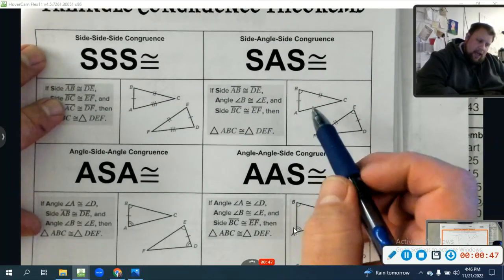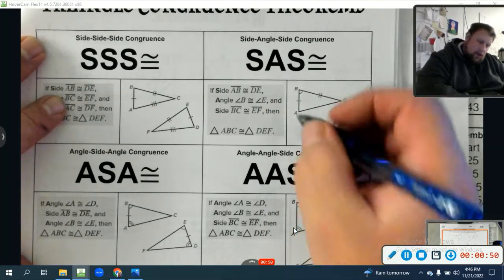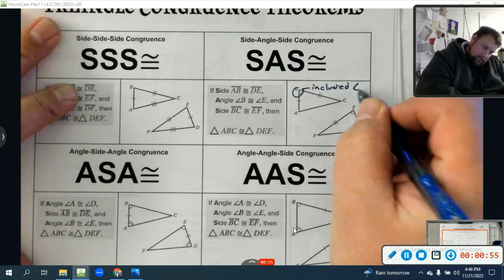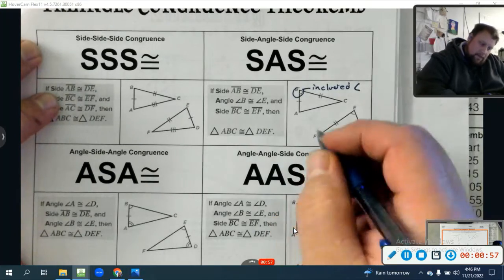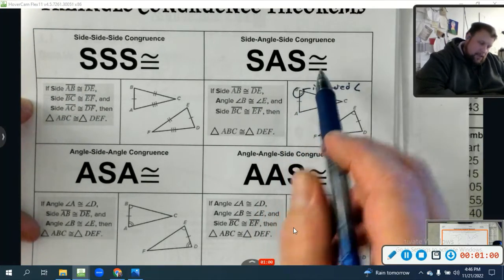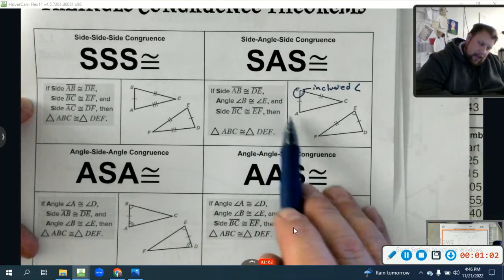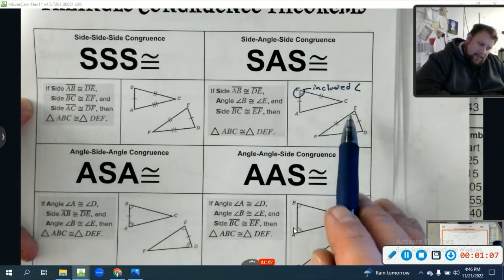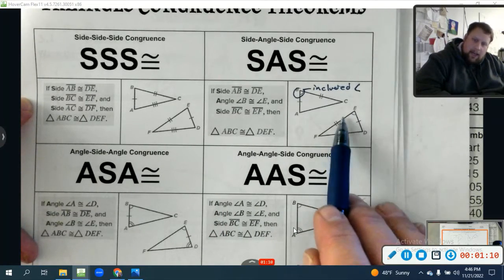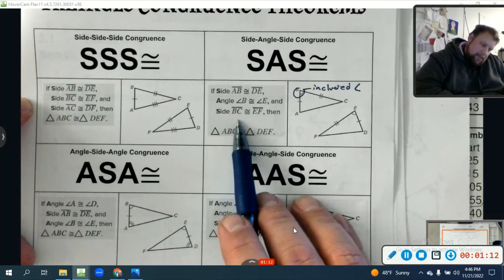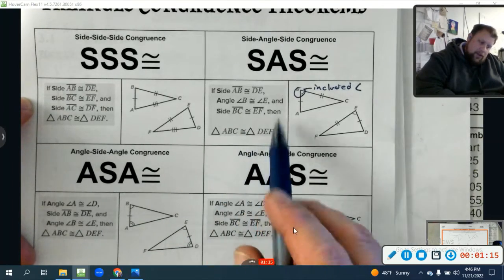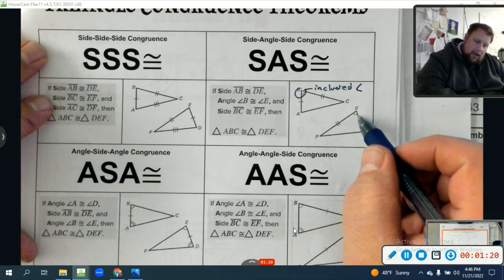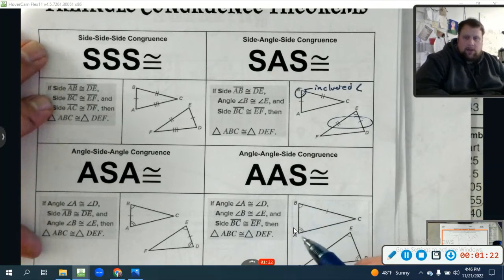Same deal with side, angle, side. Now, here's the deal. So this is called an included angle. Side angle side congruency is this: if side AB is congruent to DE, angle B is congruent to angle E - that's the angle inside. Included means inside the two sides, right? And side BC is congruent to EF, then the triangles are congruent. It's called side, angle, side. But again, it has to be the included angle, so the angle in between the two sides we're looking at.